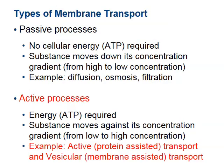Now let's talk about active transport, which requires ATP. Unlike passive processes that move from high to low concentration, active transport moves substances from low concentration to high concentration — like swimming upstream. There are two types: protein-assisted active transport (your book calls this simply 'active transport') uses a protein to drive the process; membrane-assisted active transport (vesicular transport) uses a vesicle to move large items in or out of the cell.